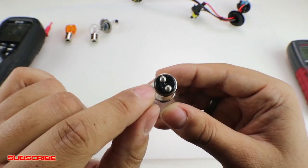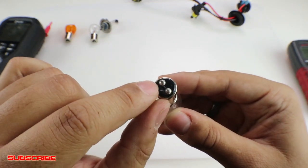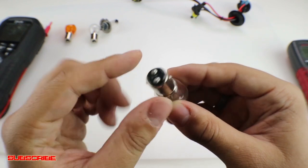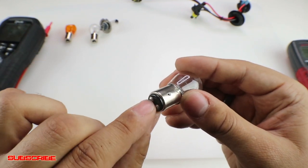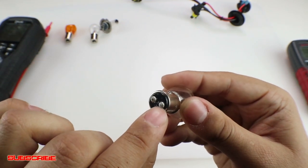Now they still use a common ground, so this entire bulb surface right here, this negative casing, this is still going to act as the negative for both the high and the low. As far as which one's high and low, yet again we still don't know. But this one will be the positive for the high and this one will be the positive for the low.